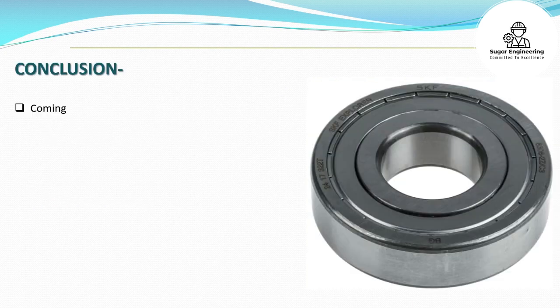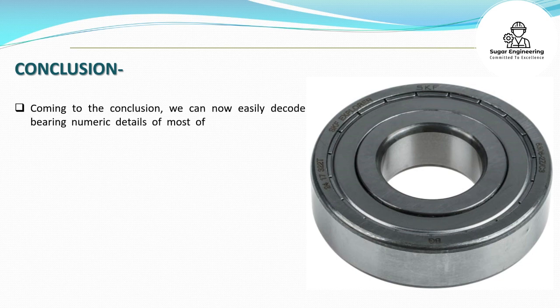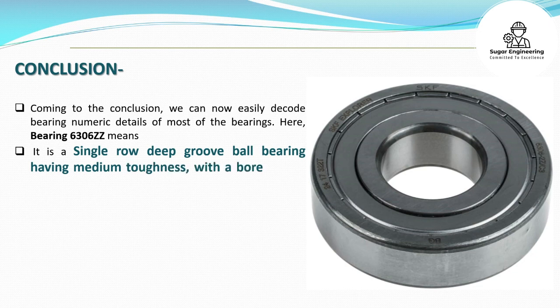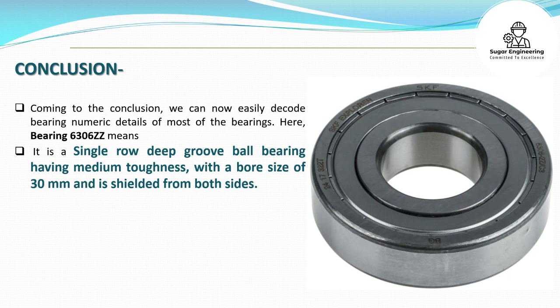Conclusion: We can now easily decode bearing numeric details of most bearings. Bearing 6306ZZ means it is a single row deep groove ball bearing having medium toughness, with a bore size of 30 millimeters, and is shielded from both sides.